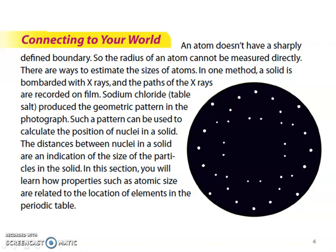The distances between nuclei in a solid are an indication of the size of the particles in the solid. In this section, you will learn how properties such as atomic size are related to the location of elements in the periodic table. Again, this periodic table is an awesome, awesome piece of paper.